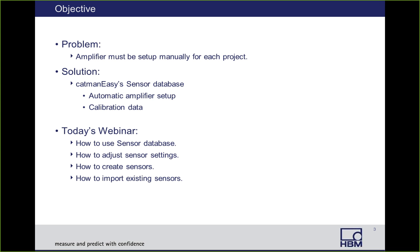HVM's solution to that is the Catman UV Sensor Database. What this does is allow automatic amplifier setup using the sensor file. Once you create a sensor file, you just reuse it over and over, and the amplifier will automatically be set up. In addition, you can include calibration data so that you can stay on top of that. In today's webinar, we'll show how to use the sensor database, how to adjust sensor settings from default settings, how to adjust calibration data, how to create sensors, and how to import existing sensors from existing databases and CAN settings.